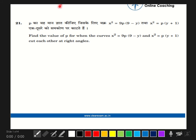Hello everyone, let's start with our 21st question. Find the value of P where the curves x² = 9P(9 - y) and x² = P(y + 1) cut each other at right angles.